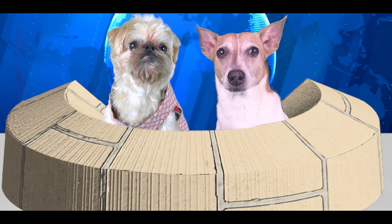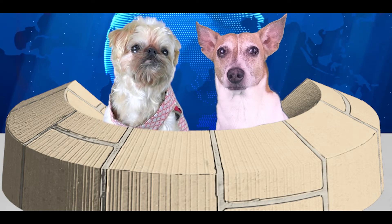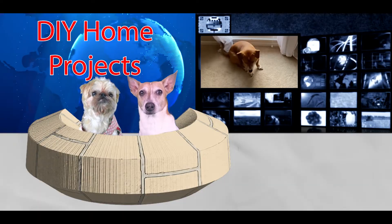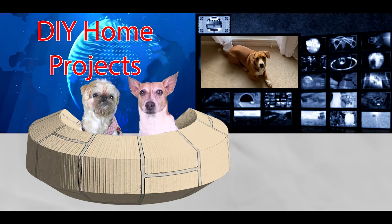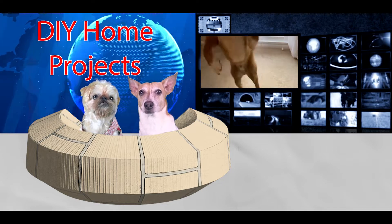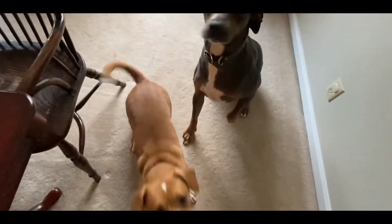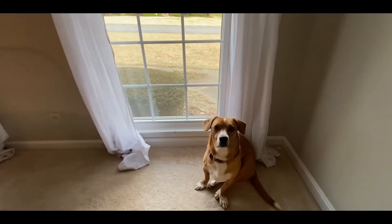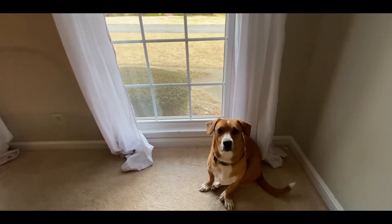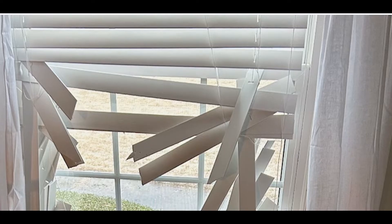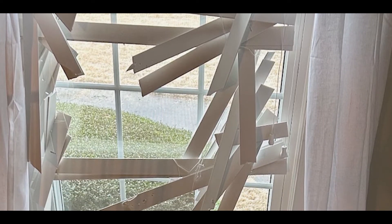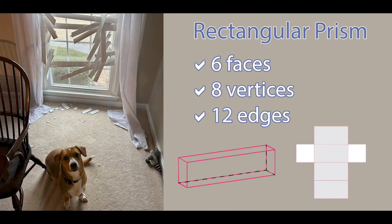Our next segment is DIY projects at home. Our underground correspondent from Georgia is Wayland. I'm so excited to tell you what I did. No, Hank. No, this is mine. My turn! It is not your turn. Just tell us. We can't wait. Ta-da! I redecorated with rectangular prisms. A rectangular prism has six faces, eight vertices, and 12 edges.